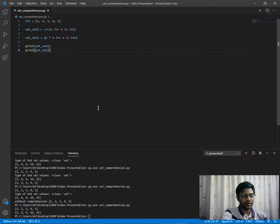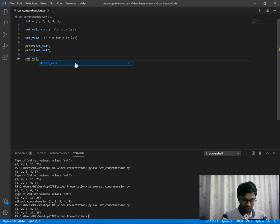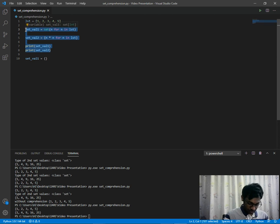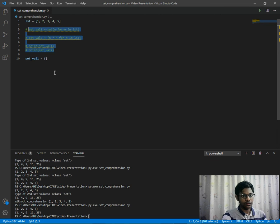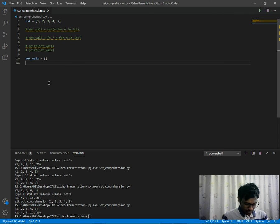This is pretty much all about set comprehensions. But if we type the code the other way, set_val1 = with open and closed parenthesis, let's put n in list.